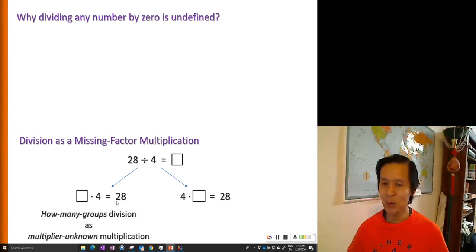In this case, we know the total is 28 and we know there are four units in each group. We are asking how many groups are there, or how many groups of four will give you 28.